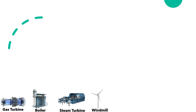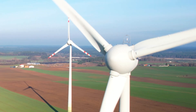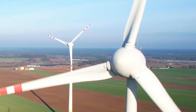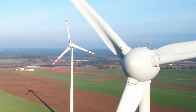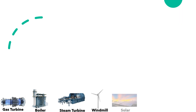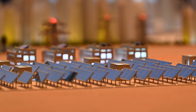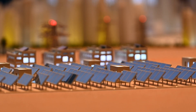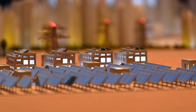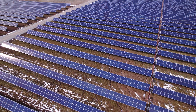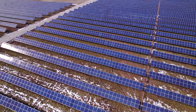A wind turbine is a device that converts the kinetic energy of wind into electrical energy. A solar power plant is a facility that converts solar radiation — made up of light, heat, and ultraviolet radiation — into electricity suitable to be supplied to homes and industries.